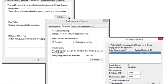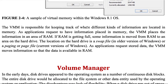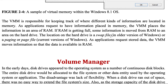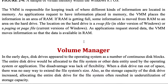This shows virtual memory in the Windows system. If RAM is getting full, some information is moved from RAM to an area of the hard drive. The location on the hard drive is called a swap file in older versions or a page file in the current version of Windows. As an application requests stored data, the Virtual Memory Manager moves information so that the data is available in RAM.